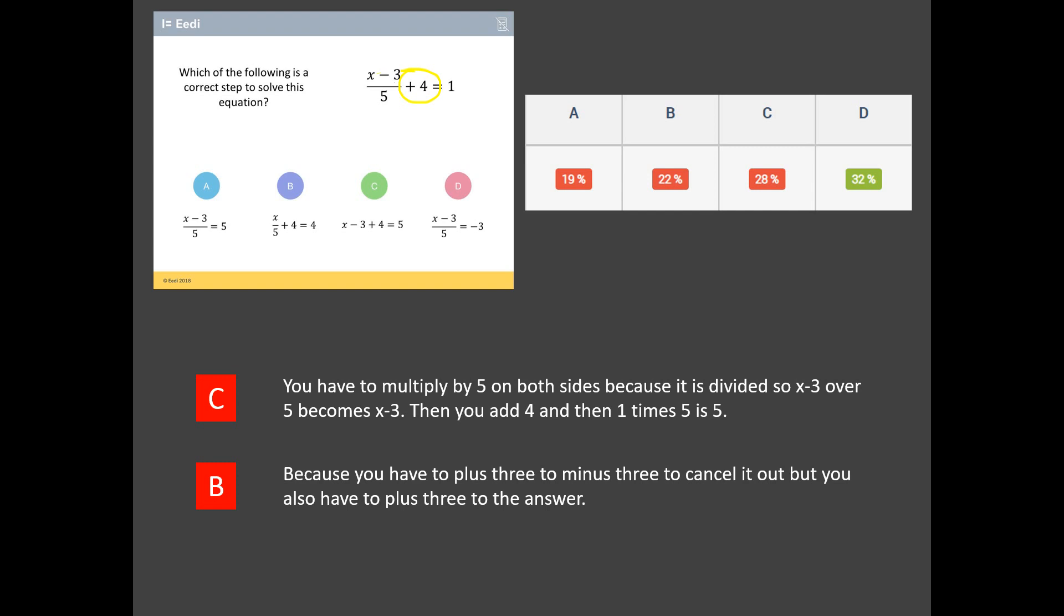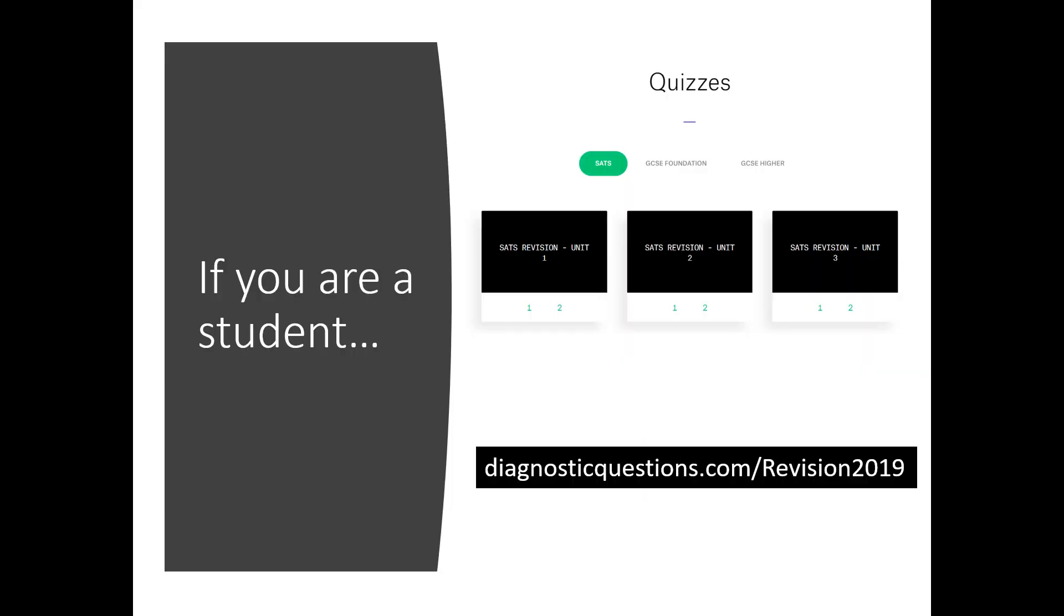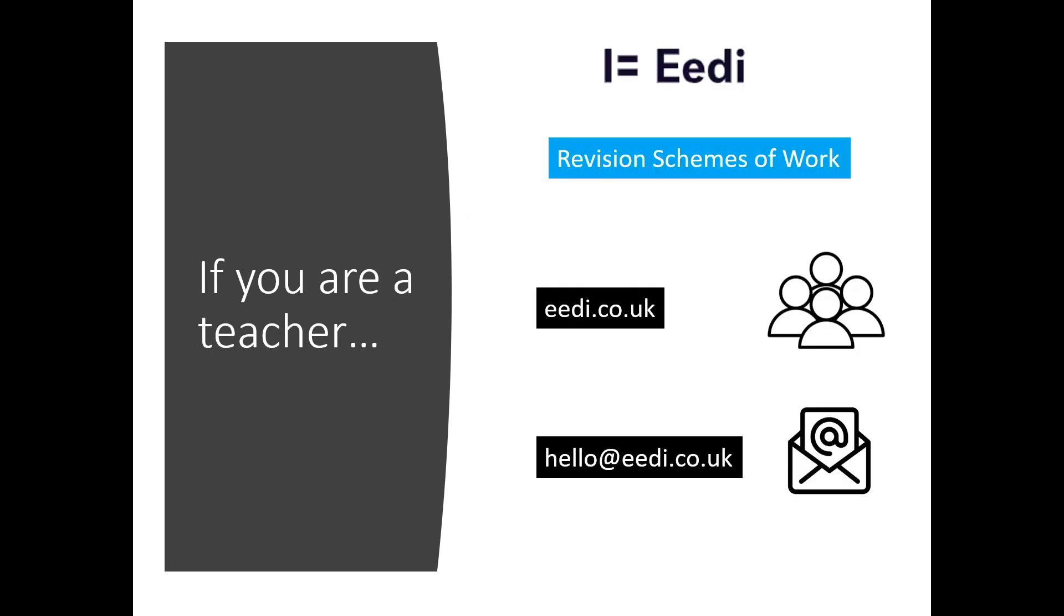How did you get on with those three questions? Really tricky questions. Don't worry if you struggled. We've seen thousands of students also struggle with them. But as long as we can confront them and talk through them together, hopefully we'll be on the path to understanding them. If this has whet your appetite for more, if you head to my website, diagnosticquestions.com forward slash revision 2019, you can access loads of these quizzes and try them and it will mark them for you. And if you're a teacher and you want to get your students set up answering these, it's all completely free. Head to eedi.co.uk, go to the revision schemes of work and if you need help getting your students on the system, send us a spreadsheet with your students' names and their classes to hello at eedi.co.uk. Hope you found that useful. I'll be back with another Beat the Nation soon. Take care and bye for now.